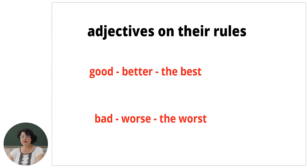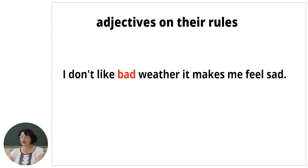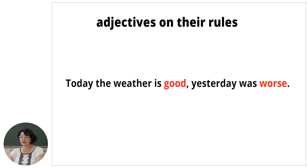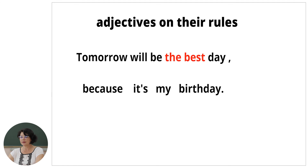And we have adjectives with their own rules — there are exceptions. Look at the screen: we have "good" and "bad". Good, better, the best. Bad, worse, the worst. Let's see some sentences with these adjectives: I don't like bad weather, it makes me feel sad. Today the weather is good. Yesterday was worse. Tomorrow will be the best day, because it's my birthday.